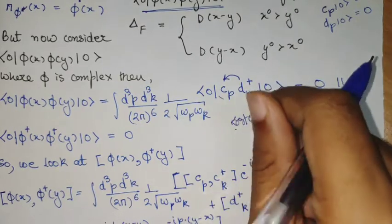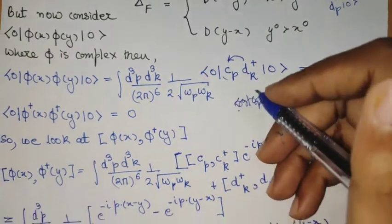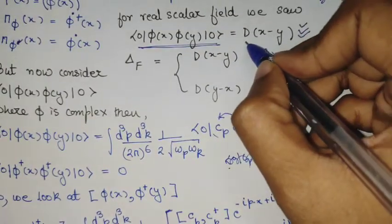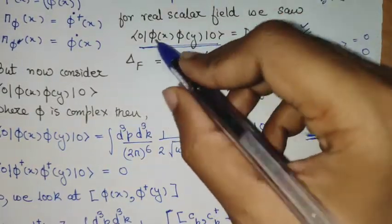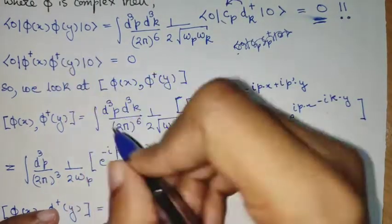So I can move the DP and CP, so this will give me zero. So we see that if we define the propagator in this form, we are getting zero always in the case of this complex scalar field.